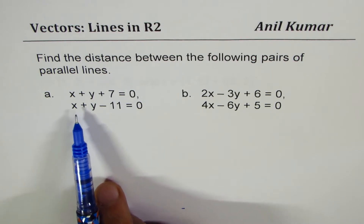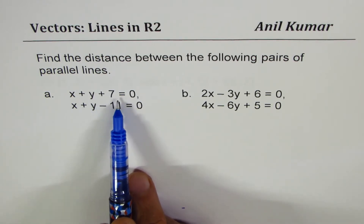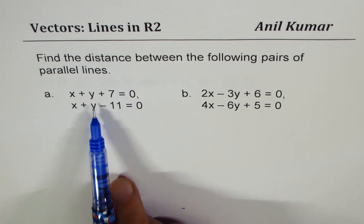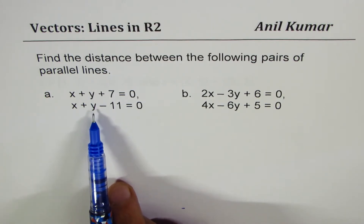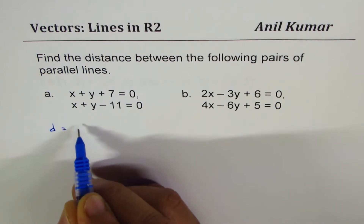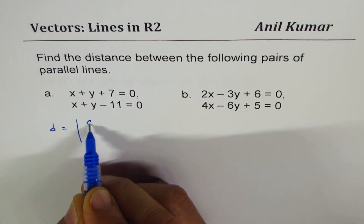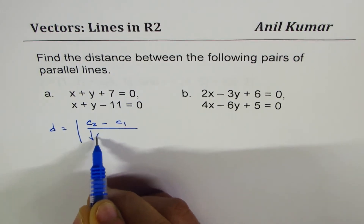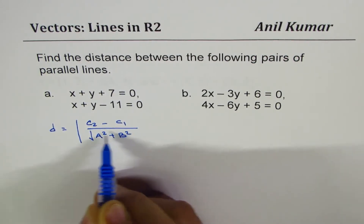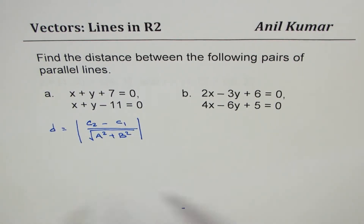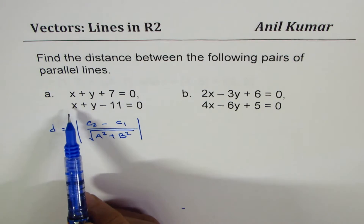Let's work with the first set: x + y + 7 = 0 and x + y - 11 = 0. Clearly these two are parallel lines. We'll apply the formula for the distance between parallel lines, which is the absolute value of c2 minus c1, divided by the square root of a² + b².